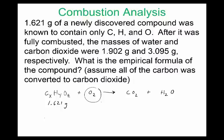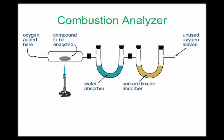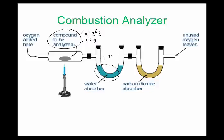We assume excess oxygen since it's in the air. What was formed: water was 1.902 grams and carbon dioxide was 3.095 grams. In the combustion analyzer diagram, our unknown compound CₓHᵧOᵤ is placed in the tube setup, and we started with 1.621 grams of the unknown. Our goal is to figure out what X, Y, and Z are.